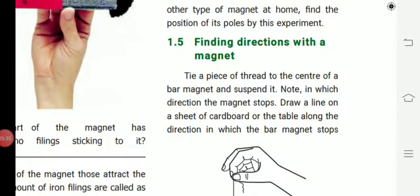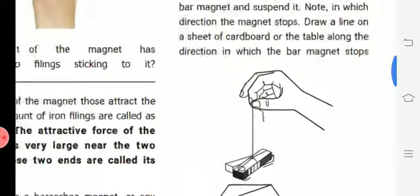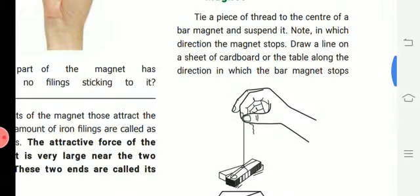Next topic: finding directions with a magnet. Direction, how to find with magnet? How is it possible? So according to this diagram, tie a piece of thread to the center of the bar magnet and suspend it. Suspend it means hang it.